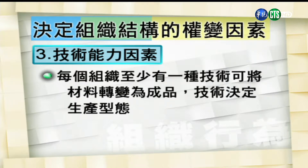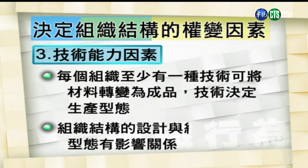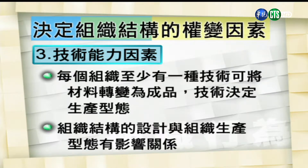第三项因素是技术能力。每一个组织至少有一种技术可将材料转化为成品，这个技术决定了生产的形态。学者研究发现，组织结构的设计与组织生产形态之间有互相影响的关系。